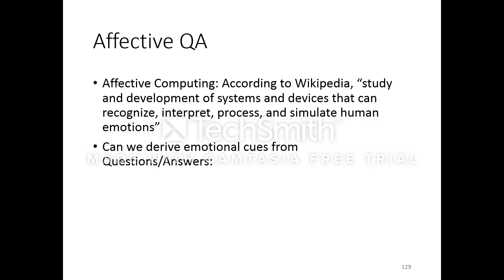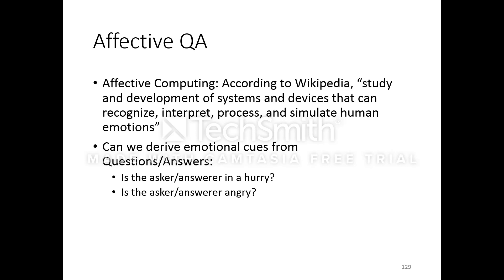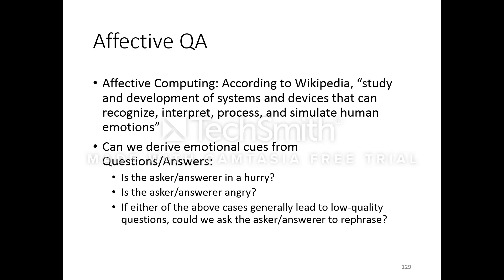Can we derive emotional cues from questions and answers? For example, can we check whether the asker or answerer is in a hurry — maybe the text ends abruptly? It may not directly correspond to an emotion, but it could be highly correlated with one. Or we can directly ask: is the asker or answerer angry? If either of these cases generally lead to low quality questions, we could ask the asker or answerer to rephrase.